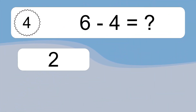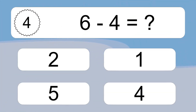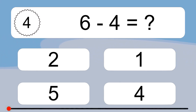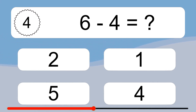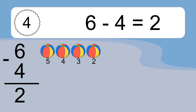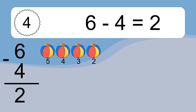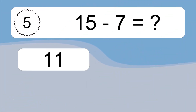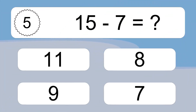6 minus 4 equals what? 6 minus 4 equals 2. Let's count it: 5, 4, 3, 2.